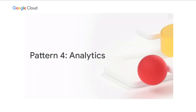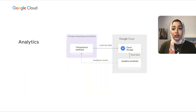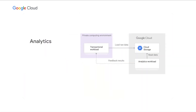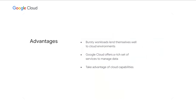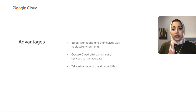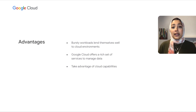Our fourth pattern is analytics. In this pattern, transactional workloads stay on-prem and analytics workloads are in the public cloud to leverage best-of-grade services. The first thing that comes to mind with this pattern is BigQuery, which is a very common reason why our customers choose this pattern. Analytics workloads often need to process huge amounts of data and can be bursty, so they lend themselves well to the public cloud and you don't need to over-provision on-prem anymore.